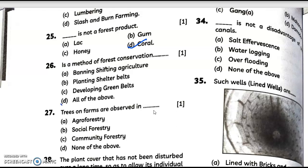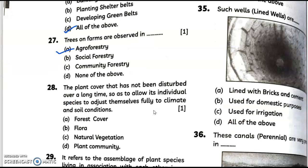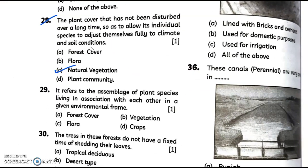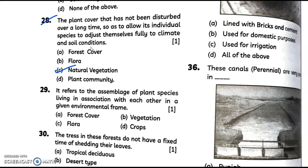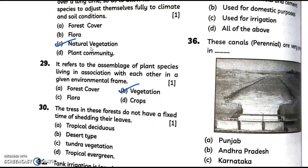Question number 25: dash is not a forest product - answer is coral. It is a method of forest conservation - answer is all of the above. Trees on farms are observed in agroforestry. The plant cover that has not been disturbed over a long time so as to allow its individual species to adjust themselves fully to climate and soil conditions - answer is C, natural vegetation. It refers to the assemblage of plant species living in association with each other in a given environmental frame - answer is option B, that is vegetation. The trees in these forests do not have a fixed time of shedding their leaves - answer is D.